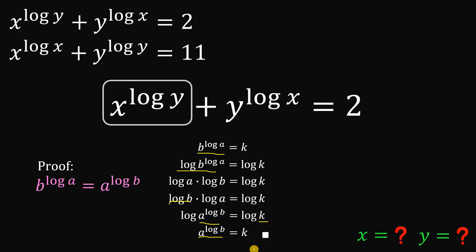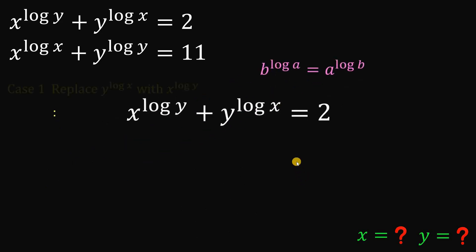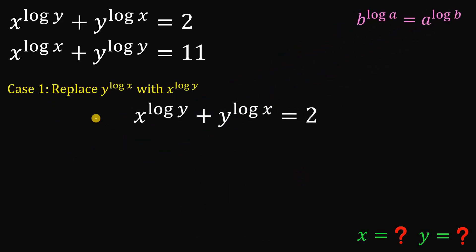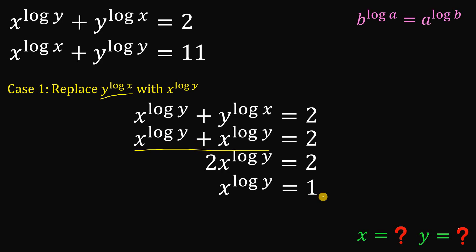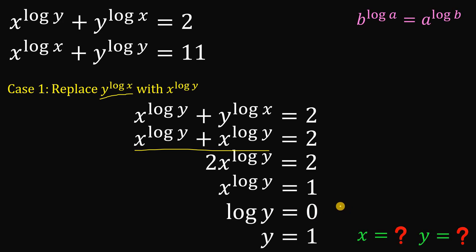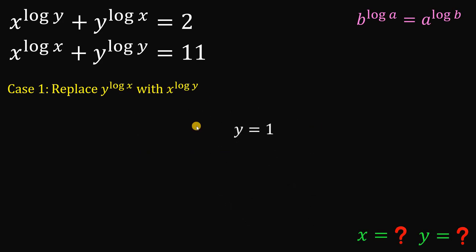That's the end of the proof. We will use this concept to answer the question. Case 1: replace y raised to the power of logarithm of x with its equivalent, x raised to the power of logarithm of y. On the left-hand side, we now have two identical terms. Dividing both sides by 2, the right-hand side becomes 1, so logarithm of y equals 0, which means y equals 1.